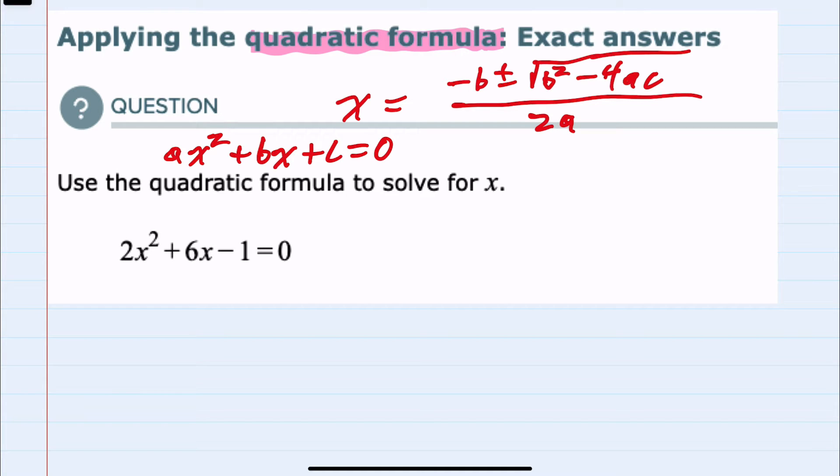And for this example, we can see that our a is 2, our b is 6, and our c is negative 1.